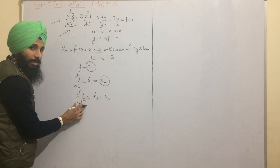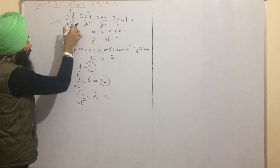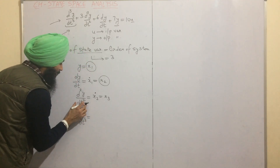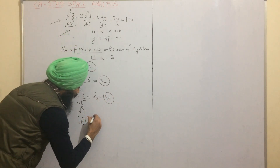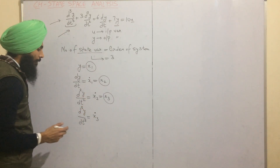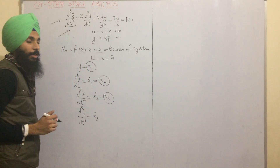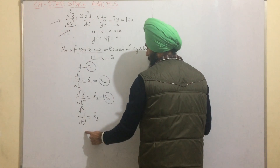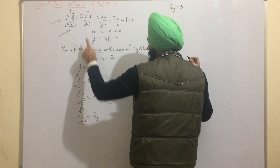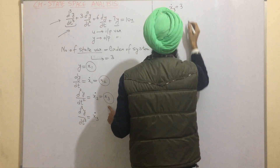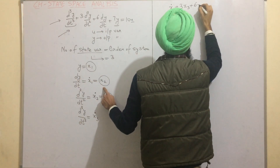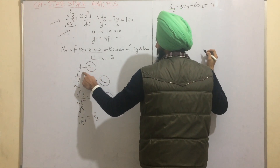Now d²y/dt² is differentiated with respect to time and written as d³y/dt³. If this is differentiated, the third variable is also differentiated, so we write x3_dot. We can now replace the state variables in the differential equation: d³y/dt³ is x3_dot, d²y/dt² is x3, dy/dt is x2, and y is x1.